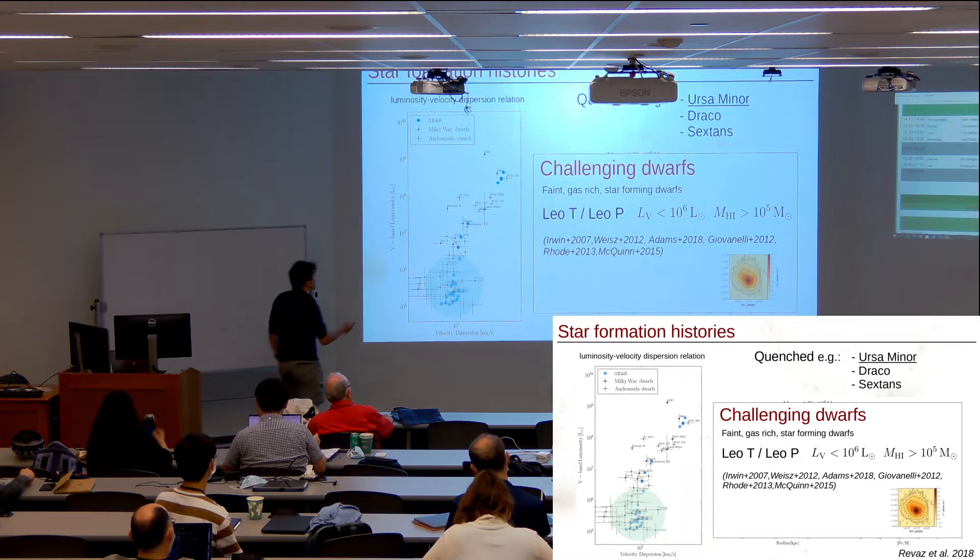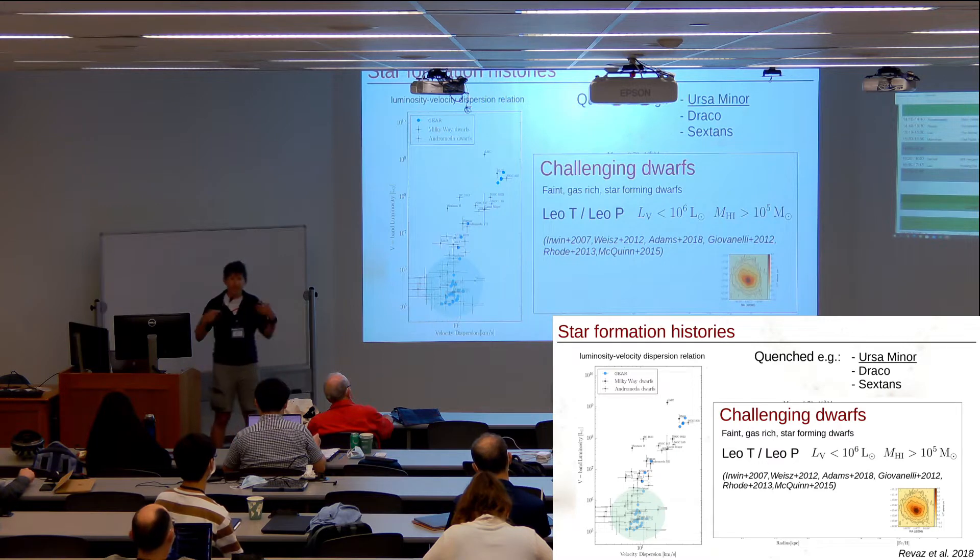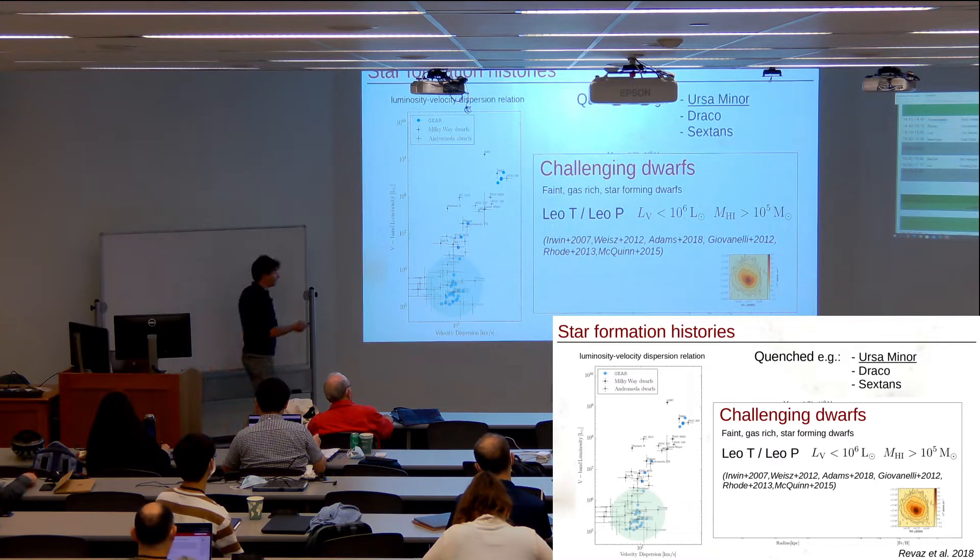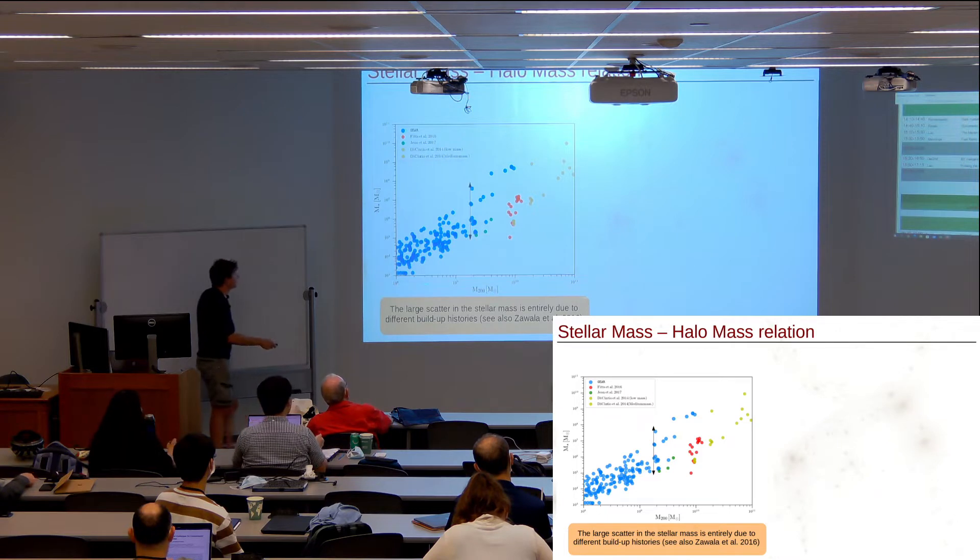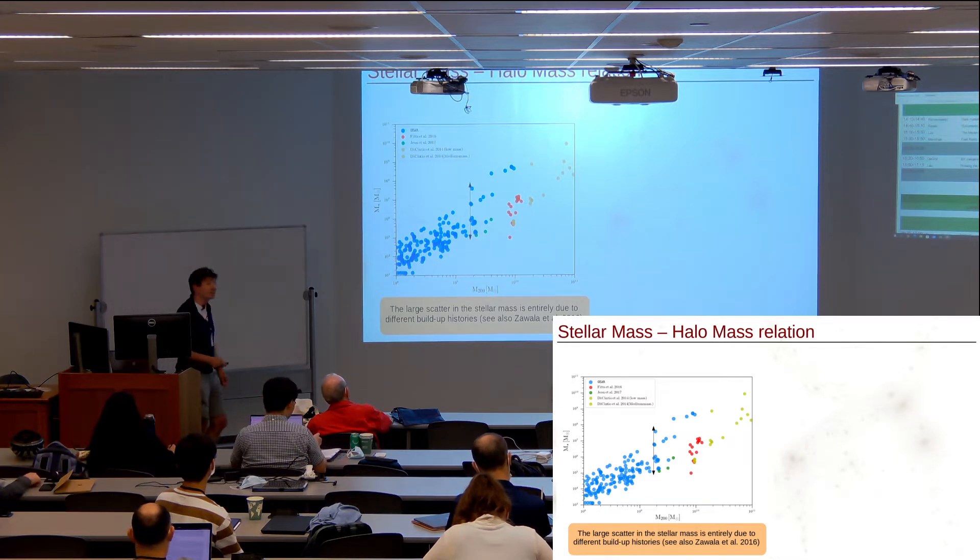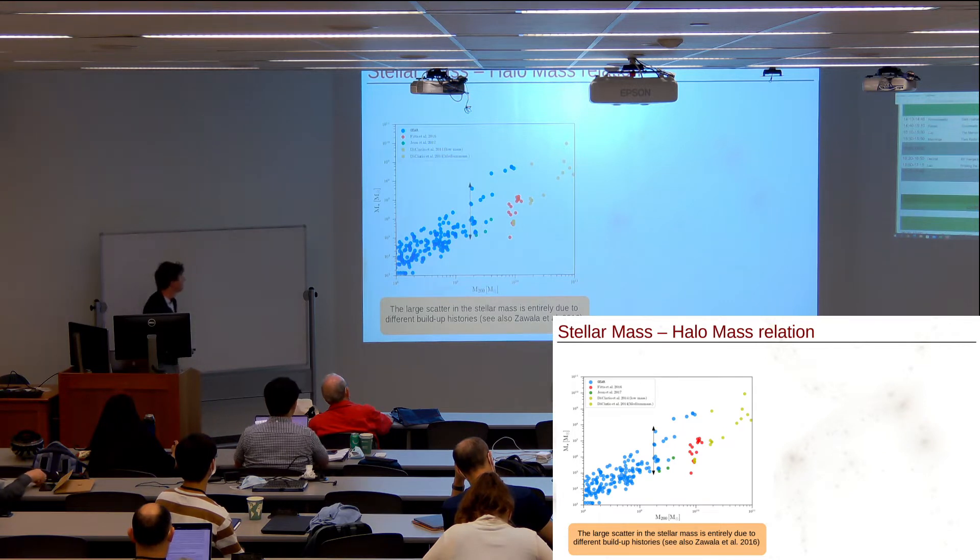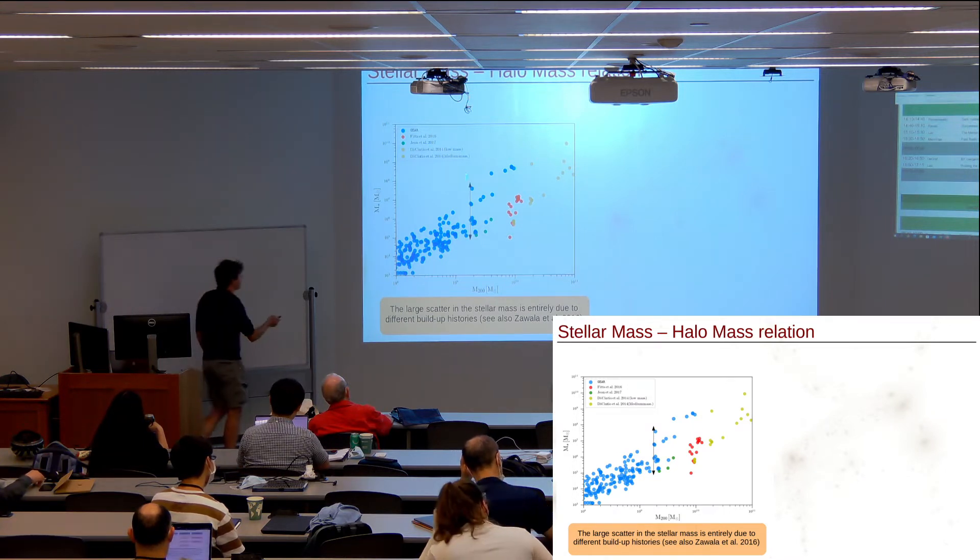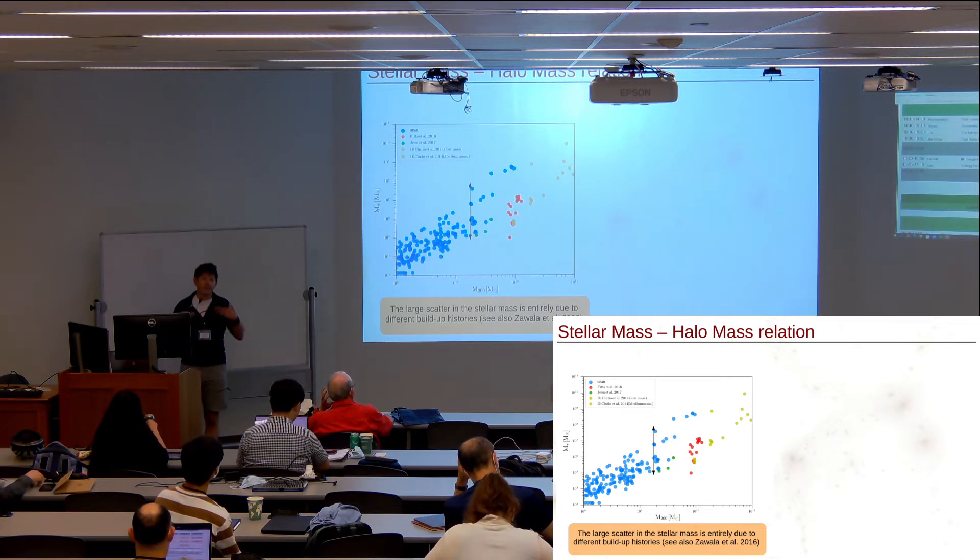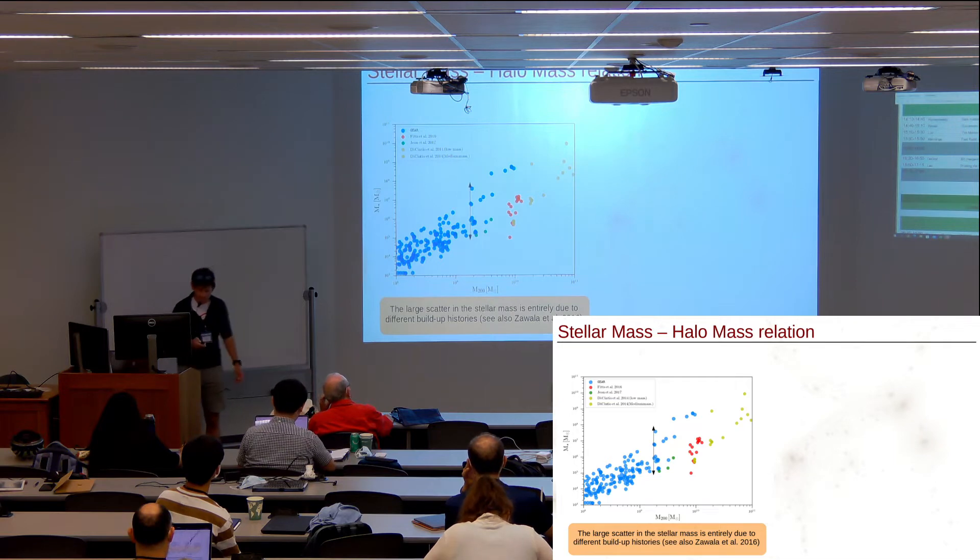What we cannot reproduce are very special galaxies like Leo T and Leo P—very faint systems with luminosity less than 10 to the 6 that are still forming stars, still linked to gas. Apparently those galaxies survived the reionization epoch; that's something we definitely cannot reproduce. From our models, we can look at the stellar mass-halo mass relation. I want to emphasize the very large scatter here, which is definitely the direct consequence of the different build-up histories of those dwarf galaxies, not due to interactions.